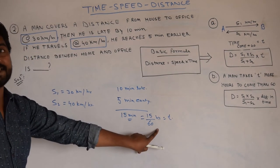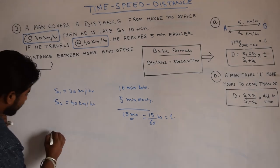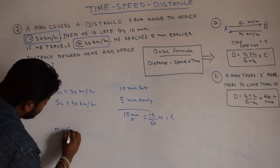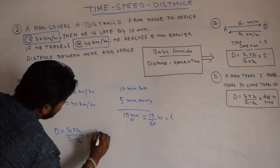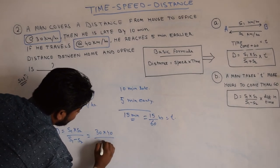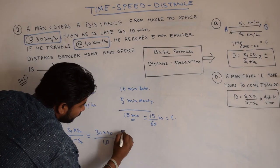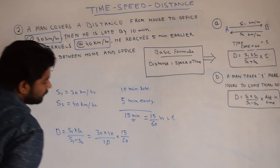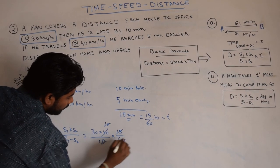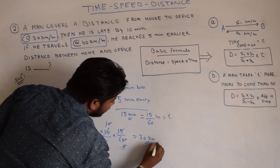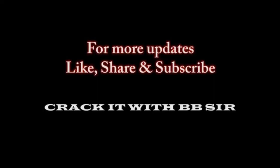The time difference T = 15/60 hours. Applying the second formula: D = (S1 × S2) / (S1 − S2) × T = (30 × 40) / (40 − 30) × (15/60) = 1200 / 10 × (1/4) = 30 kilometers. So the distance between the house and the office is 30 kilometers.